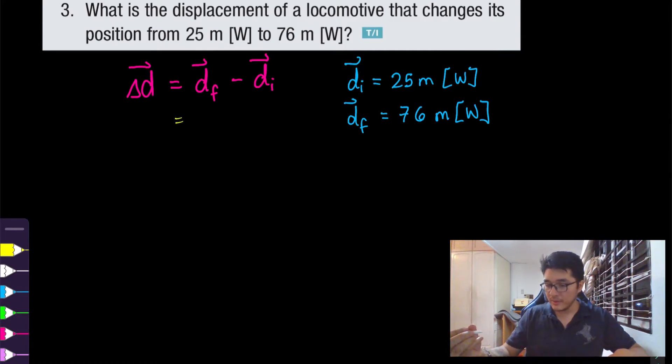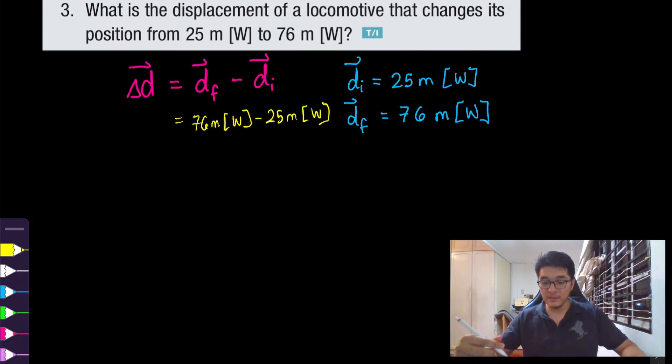From our formula we just need to subtract these two quantities. The final is 76 meters west and the initial was 25 meters west. Now since these two are actually like terms—in other words like directions—we can just do the subtraction there. So 76 minus 25, that would give us 51 meters west.